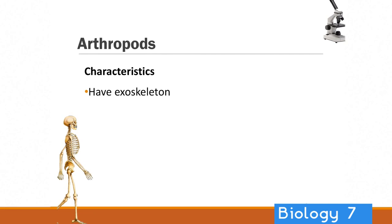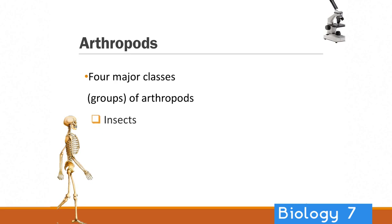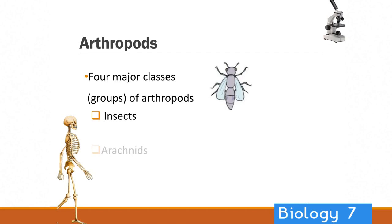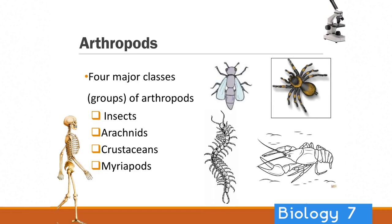Arthropods have an exoskeleton and a segmented body — you can see all of these animals here are arthropods. An exoskeleton is a skeleton around the outside, and segments in their body. They've got jointed limbs and can be further divided into four major classes: insects, which you'll be very familiar with; arachnids, which are your spiders; crustaceans, so your lobsters and shellfish; and also the myriapods, which are like segmented worms.